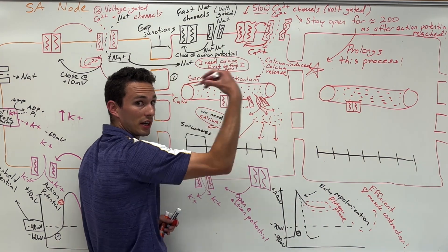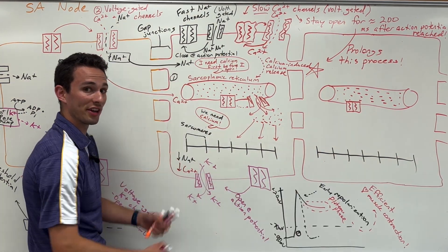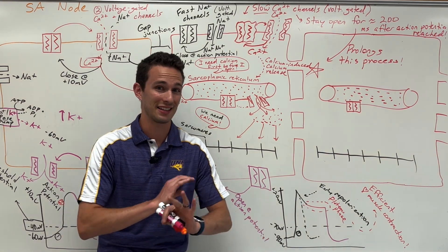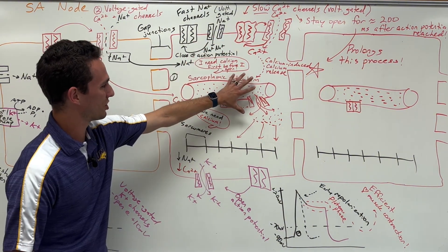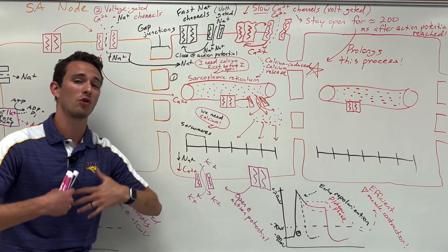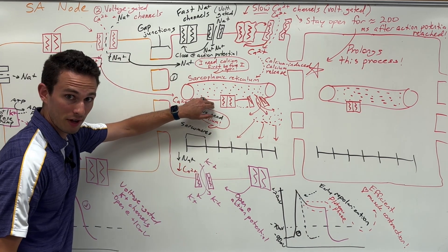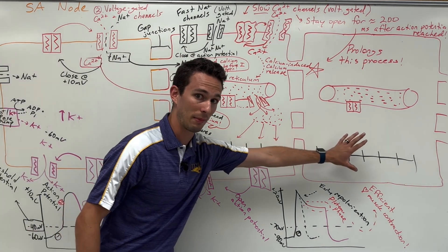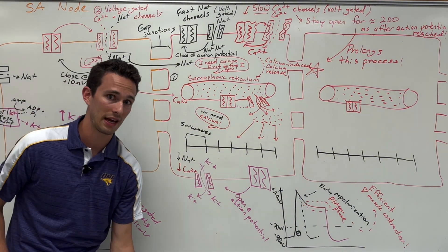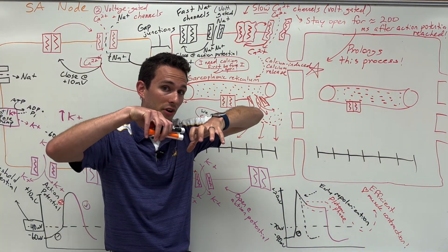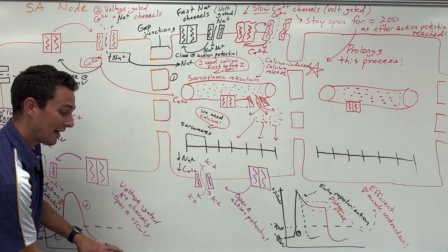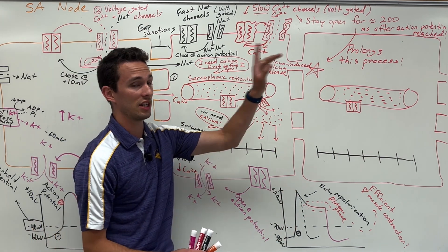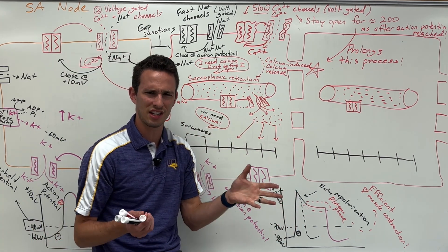Right at the end of the plateau phase, the slow calcium channels close, and then the net efflux of potassium wins out, dropping the voltage all the way back down to resting potential. Now we have a bunch of calcium and sodium inside the cells and a bunch of potassium we lost, so we need different pumps to reestablish those gradients — including the SERCA pump that pumps calcium back into the sarcoplasmic reticulum, and the sodium-potassium pump that reestablishes the gradient in both the SA node and cardiac myocytes. This was the SA node signaling specifically the atrial muscle. The AV node is another pacemaker cell that contracts the ventricle muscle through the same process. If you want to learn more about the heart's conduction system or the ECG, check out those videos.